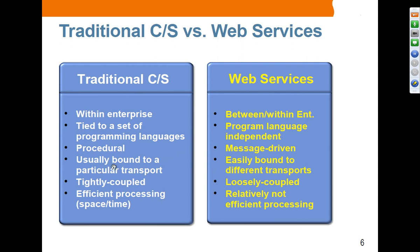In traditional client-server, communication is more or less procedural, whereas in web services it is message-driven — communication is done through sending and receiving messages. Traditional client-server is usually bound to a particular transport; however, web services can use different transports. The most pervasive transport used in web services is HTTP, but web services are designed to work over different transport protocols such as SMTP or JMS.